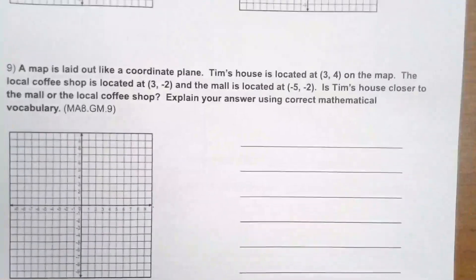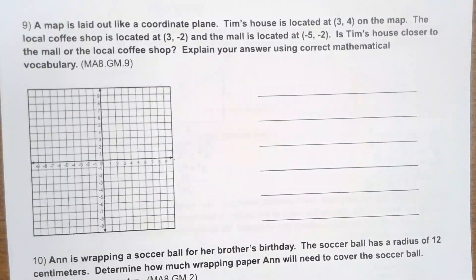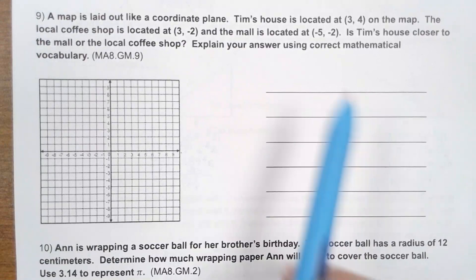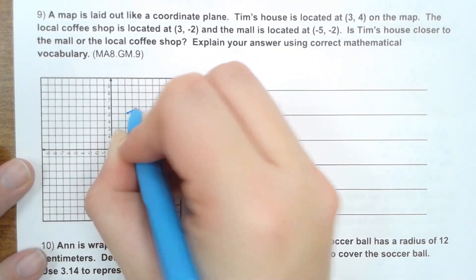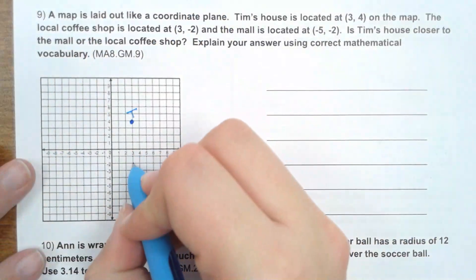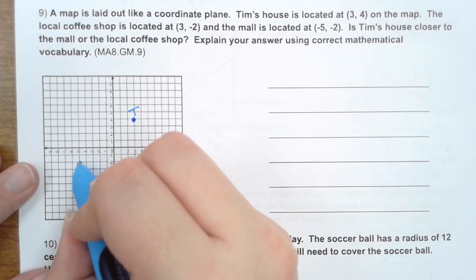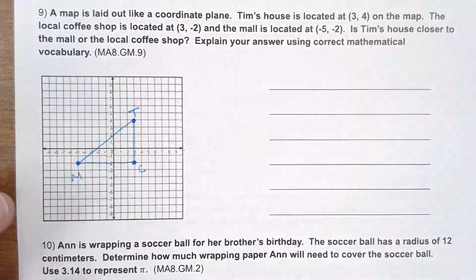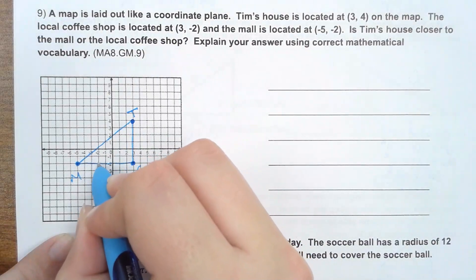The map is laid out like a coordinate plane. Tim's house is at (3, 4), the local coffee shop is at (3, −2), and the mall is at (−5, −2). Is Tim's house closer to the mall or the local coffee shop? First, plot all points. Notice how they form a right triangle. The distance from the mall to the coffee shop is 8 units. The distance from Tim's house to the coffee shop is 6 units.